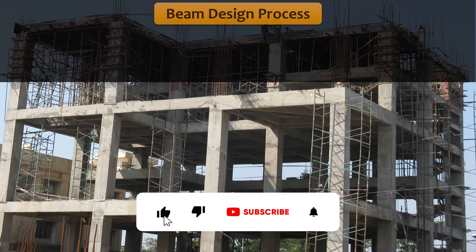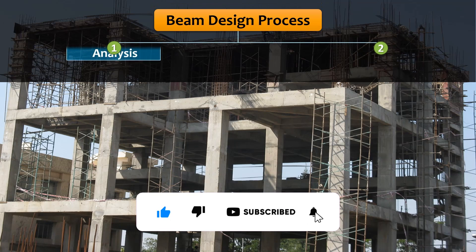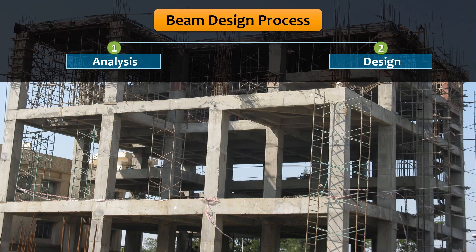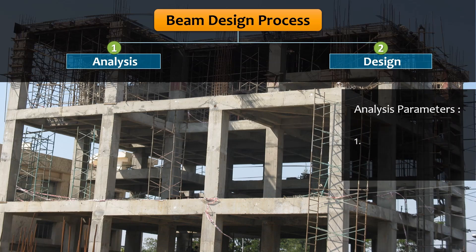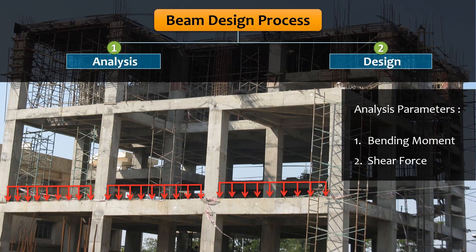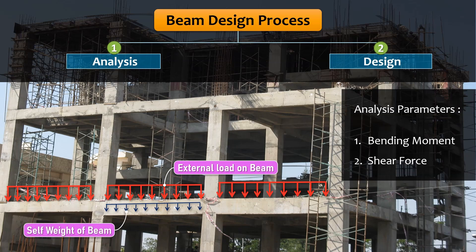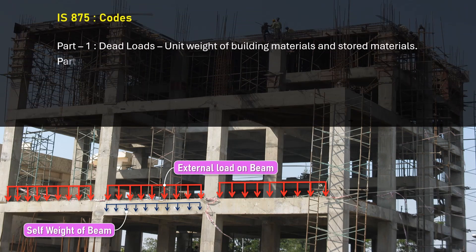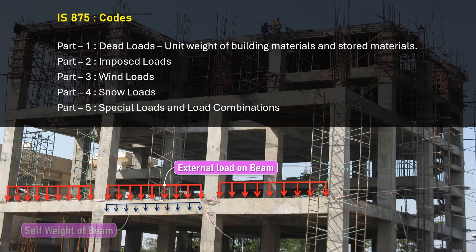The RCC beam design process involves two primary steps: first, analysis, and second, design. In analysis, to compute critical parameters such as bending moment and shear force, we need to consider the loads acting on the beam. This includes external load and the beam's self-weight. The external loads like imposed load and material density are determined based on relevant IS code guidelines such as IS 875 Part 1 to Part 5. The self-weight of the beam is computed by multiplying the density of concrete with the cross-sectional dimensions of the beam.